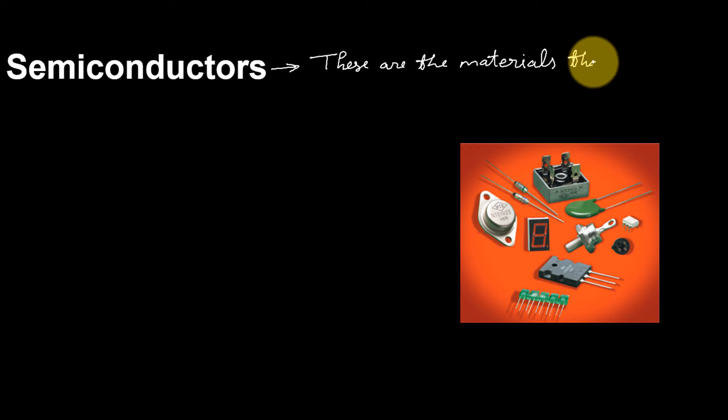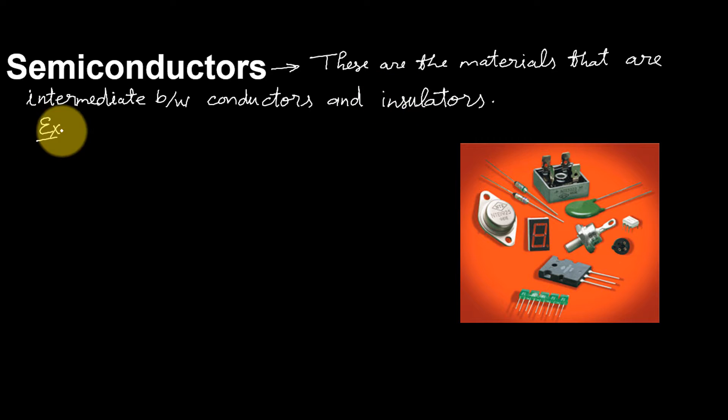Third is semiconductor. These are the materials that are intermediate between conductors and insulators. Examples of semiconductors are silicon and germanium.